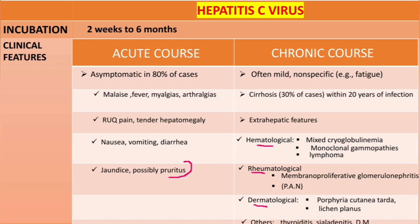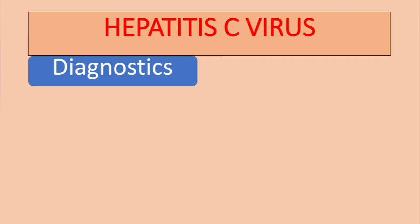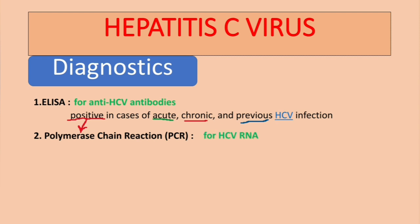Now let's talk about diagnosis of Hepatitis C virus. First, we need to do an ELISA test — that's enzyme-linked immunosorbent assay — specifically to detect anti-HCV antibodies. This result is positive in cases of acute, chronic, or previous HCV infection. If the result is positive, we then do the next test: polymerase chain reaction, or PCR.